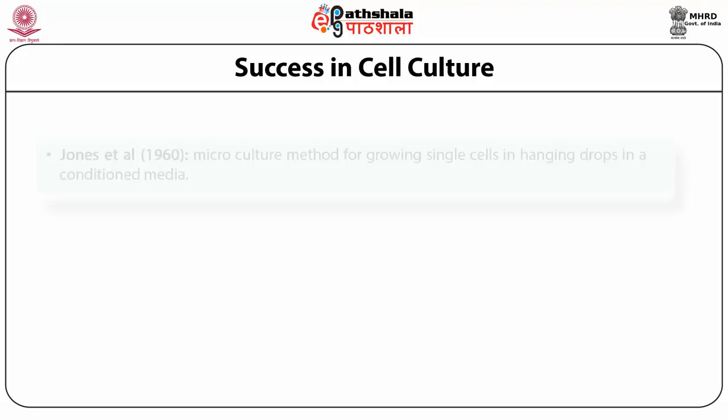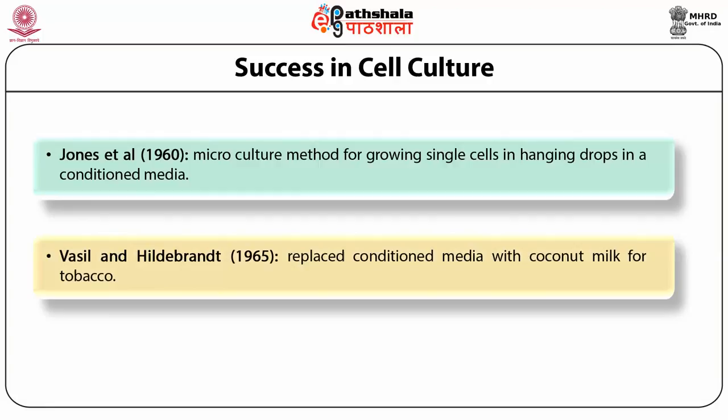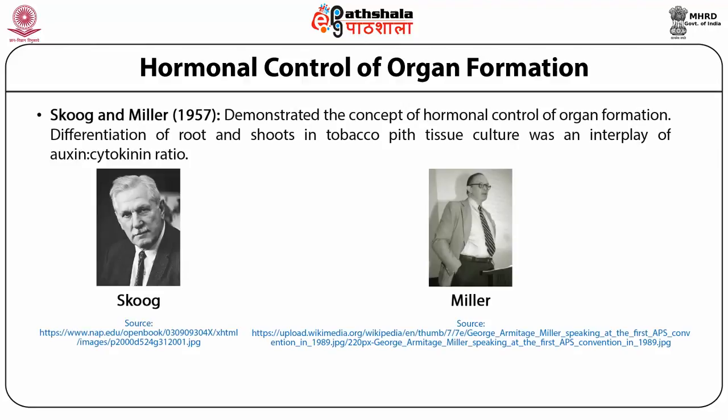In 1960 Jones and his co-workers succeeded in growing single cells by making use of conditioned media — that is, media in which tissue has been grown for some time and thus has growth factors released by the growing tissue. Thereafter Vasil and Hildebrandt raised whole plants of tobacco starting from a single cell by this technique.